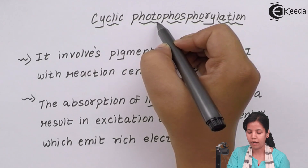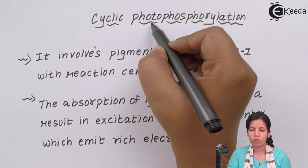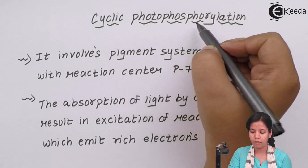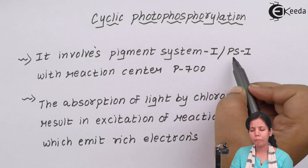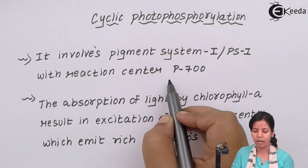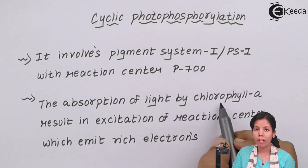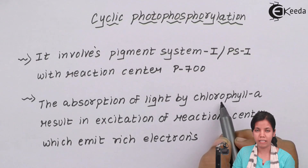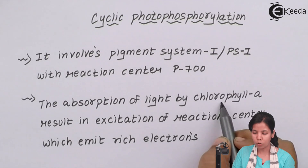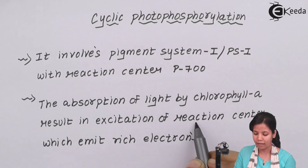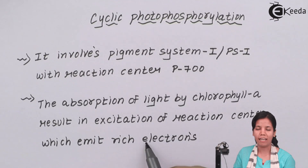During cyclic photophosphorylation, 'photo' refers to photons or sun's energy, and 'phosphorylation' refers to the formation of ATP — adenosine triphosphate. Cyclic photophosphorylation uses pigment system 1 or PS1, which has a reaction center of P700. There are pigments present inside the grana: chlorophyll A, chlorophyll B, carotenoids, and xanthophyll. Chlorophyll A is the master pigment, while the rest are accessory pigments. Chlorophyll A absorbs sun's energy, gets excited, and energy-rich electrons are passed to various electron acceptors.